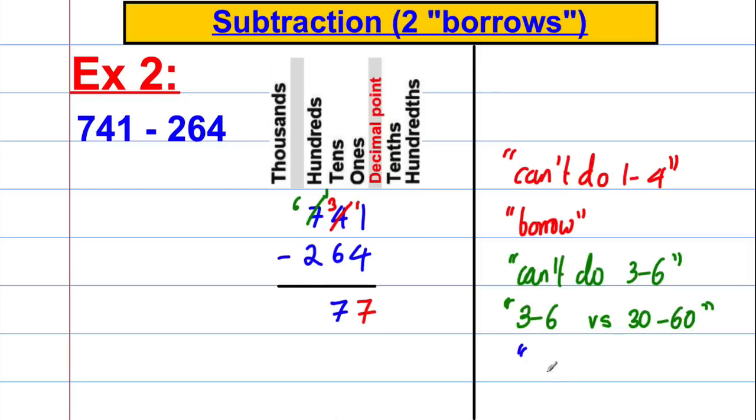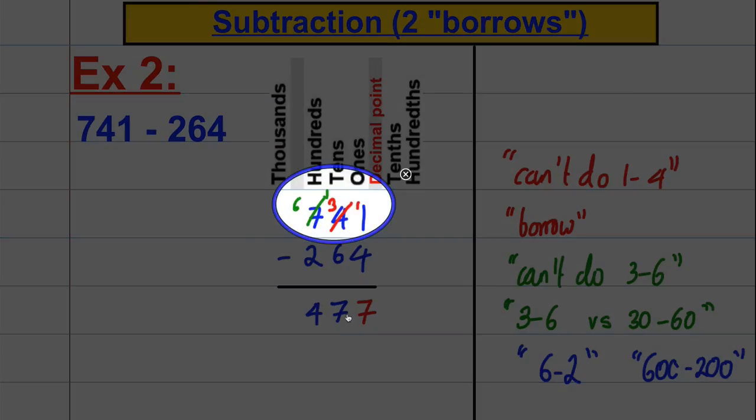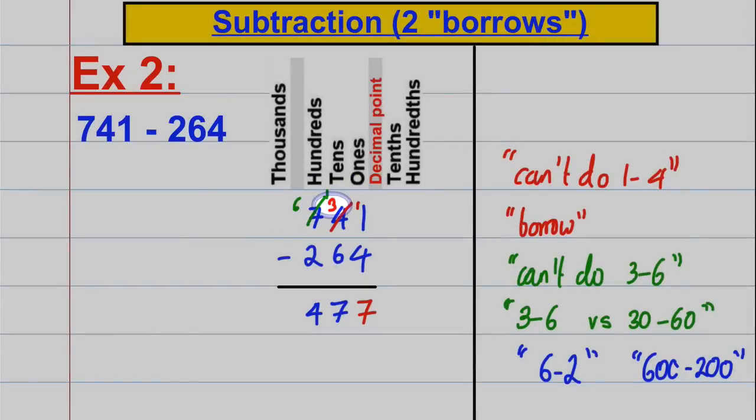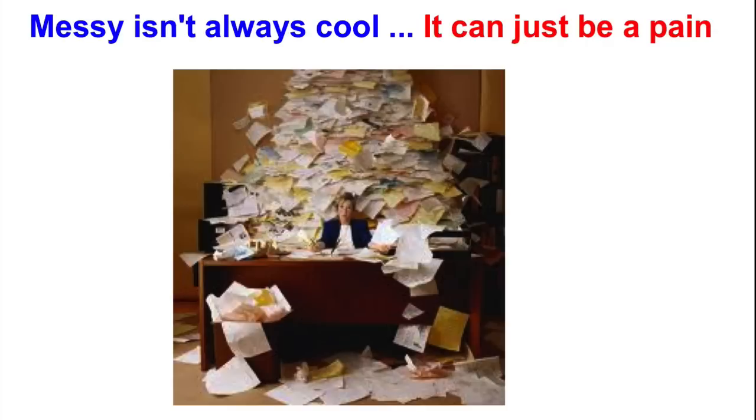Again, watch how I've just fallen into it there and said 6 subtract 2 rather than 600 subtract 200. Even I fall into it with this method. I'm checking on my calculator that that's actually right right now. I'm not entirely even confident with that method. I don't feel safe with that method because of what's going on here. Look at around here. That's getting very messy. I'm not even sure what I'm doing. It's confusing for me. So the message from that is it's not always cool to be messy. It can just be a pain.